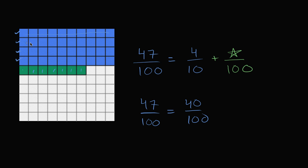This is 10, 20, 30, 40 hundredths, plus 1, 2, 3, 4, 5, 6, 7 hundredths, plus 7 hundredths.